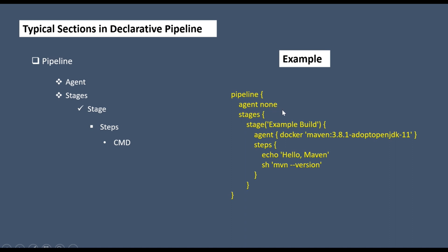In the example structure, I have defined 'agent none' and then 'stages'. Under stages, I define the stage with a label such as 'example build', indicating which task that stage belongs to. The agent can be written twice — once at the pipeline level and once under the stage. This is optional. The pipeline-level agent is valid for the entire pipeline, while a stage-level agent is only valid for that specific stage.